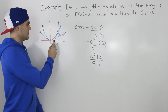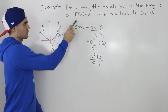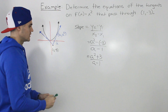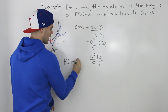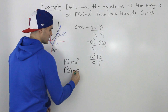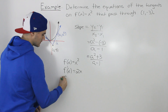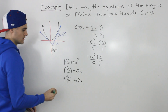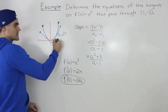Now because this line is also tangent to the curve x squared, we can find the slope of this line using the derivative. So if f(x) = x², then the derivative using the power rule is just 2x. So at an x value of a, the value of the derivative would be 2a. That expression also represents the slope of this tangent line.